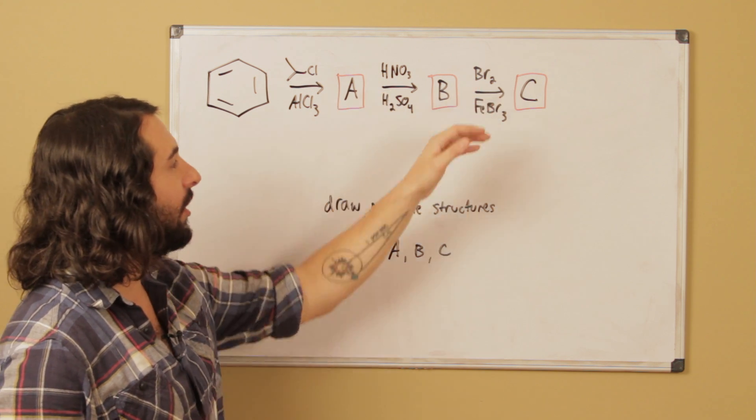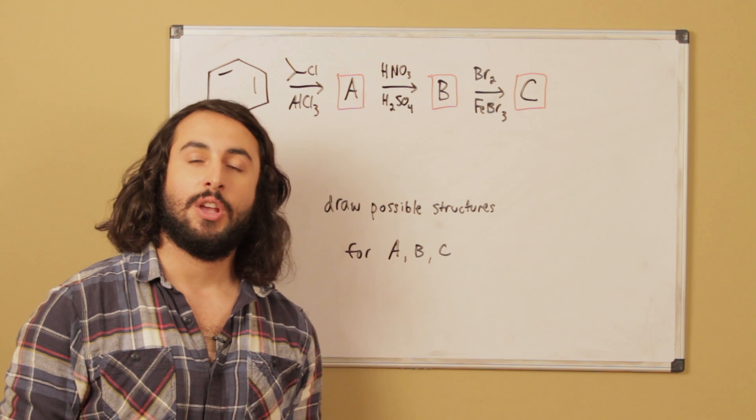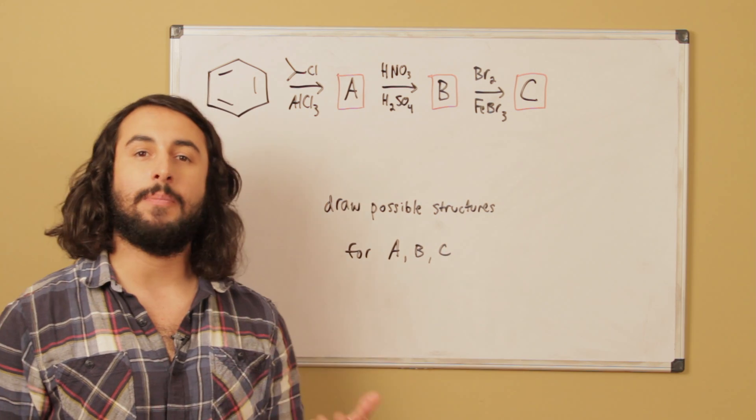That is going to be relevant here, and we're going to generate product A, undergo another transformation, product B, undergo another transformation, product C. So what I want you to do is go ahead and draw possible structures for A, B, and C.